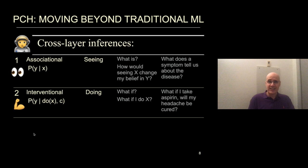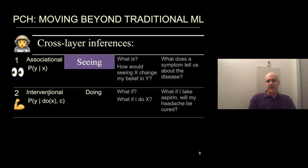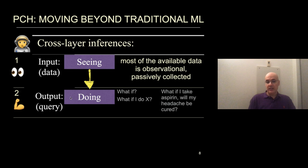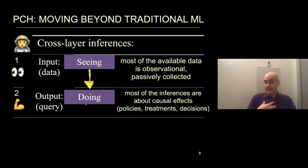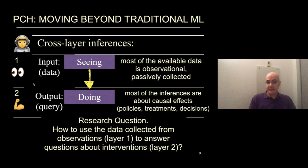I would like to highlight a different family of inferential tasks that fall very naturally causally — called cross-layer inferences. Layer one is related to seeing; suppose we have some data, and most available data today is observational — perhaps 99% of the data we have comes from layer one. Yet 90% of the inferences we want to make today are about doing, or layer three about counterfactuals, policies, treatments, and decisions. The research question: how can we use data collected from observations passively — layer one, from hospitals — to answer questions about interventions in layer two?